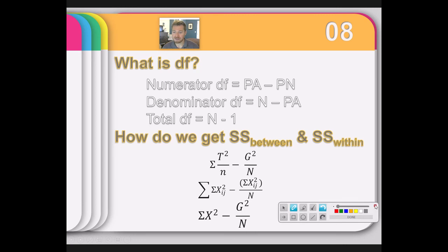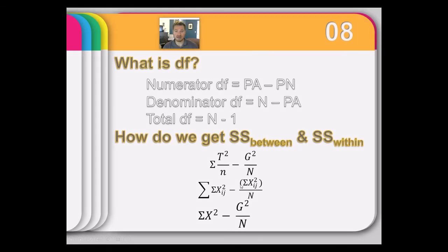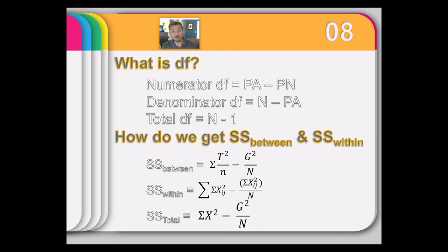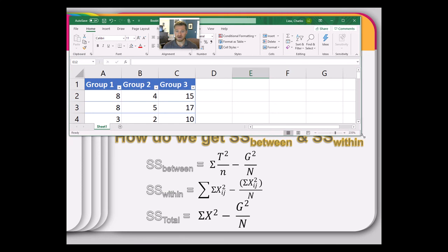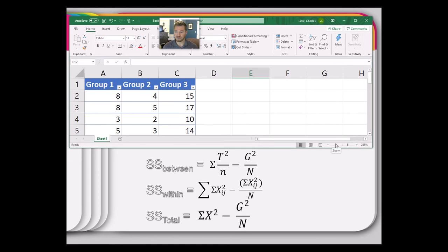Hopefully that clarifies the degrees of freedom. Let's now look at the notation used to quickly summarize how to get the different sum of squares. We have sum of squares between, within, and total. Doing these by hand is probably never really worth it in our class. You can do these quickly in Excel, or as part of JASP calculations. If you need sum of squares, Excel makes it pretty simple.